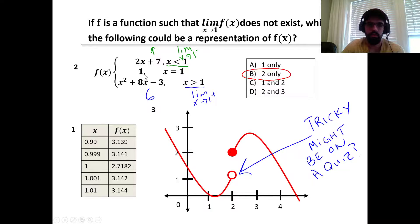Our definition for does not exist means that the limit as x approaches 1 from the left is not the same as the limit as x approaches 1 from the right.